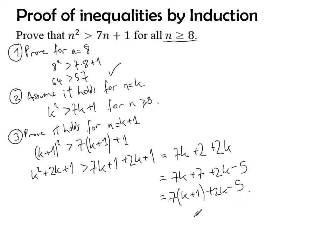Now, the thing to realize is that 2k minus 5, since n must be bigger or equal to 8, is going to be bigger than 0.